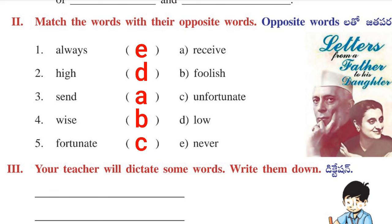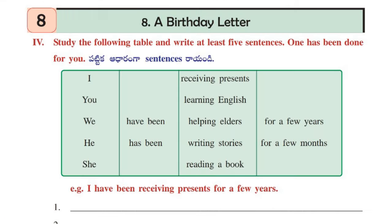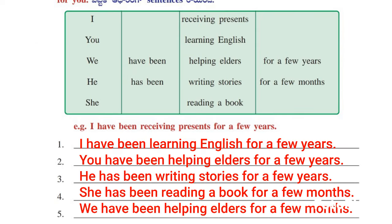Your teacher will dictate you some words and you have to write it down without doing any mistakes. Let's see the next roman. Here one table is given. We have to study the table — examine the table very carefully and write down any five sentences by using the table.